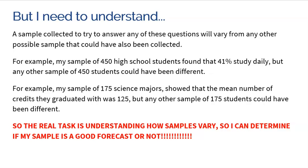For example, maybe I have a sample of 450 high school students and it found that 41% study daily, but any other sample of 450 students could have been different. Could have been 42%, could have been 38%, could have been 50%. I don't know. All I know is my one sample, but I have to know that it could vary from other samples of the same size.